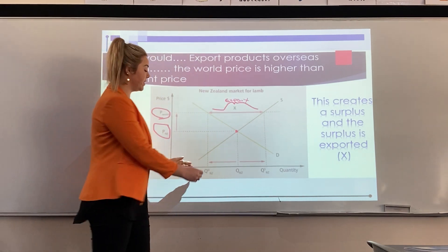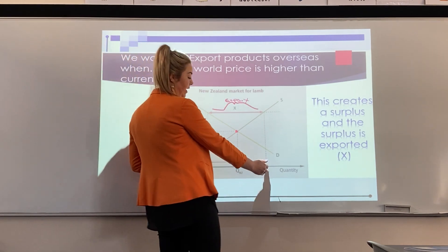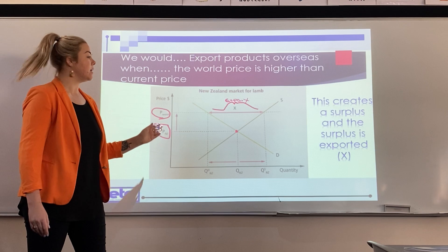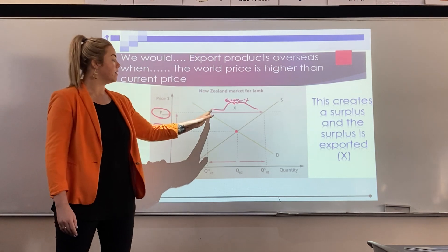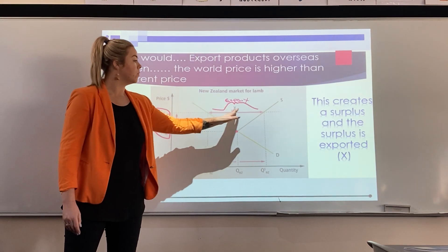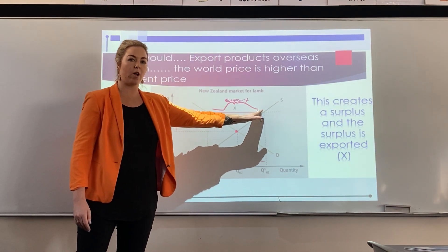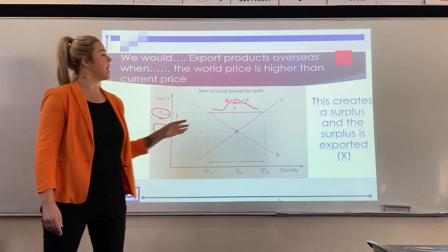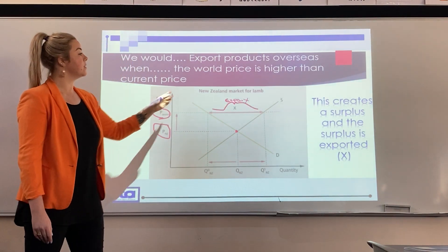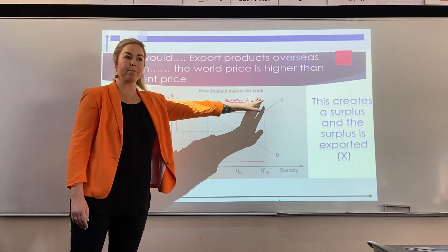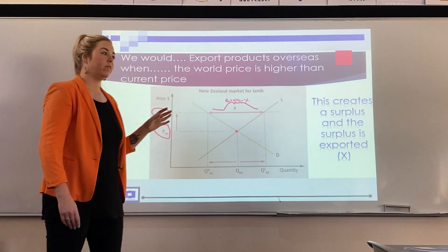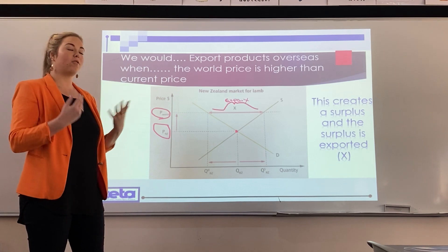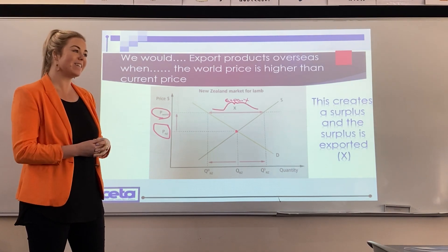The difference between our demand and our supply is the gap which we would export, because it's a surplus. For example, this is a New Zealand market for lamb — New Zealand has raised and grown all this lamb meat.